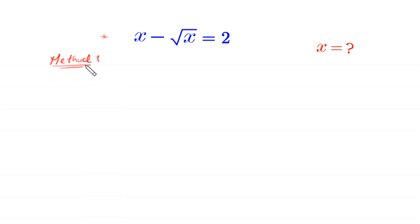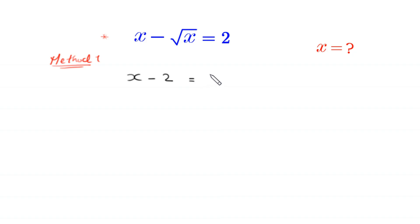In method 1, we move this 2 to the left hand side and this negative root x to the right hand side. Then this equation will become x minus 2 is equal to root x. Now from here we take the square of both sides of this equation.